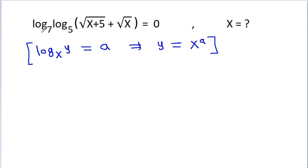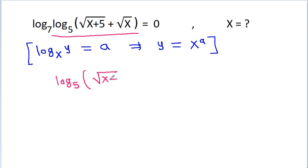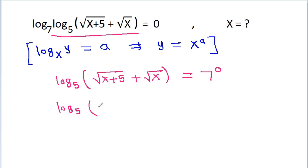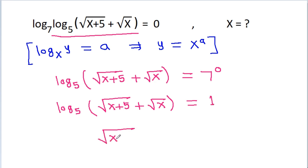We have log base 7 of this expression, so log base 5 of (square root of (x plus 5) plus square root of x) will be equal to 7 to the power 0, which is 1. So square root of (x plus 5) plus square root of x is equal to 5 to the power 1.